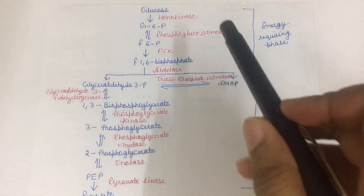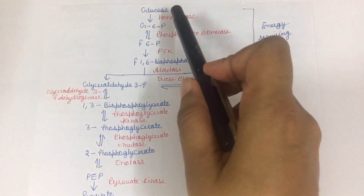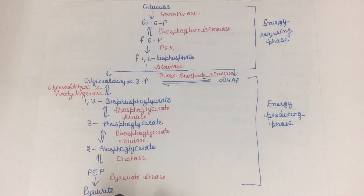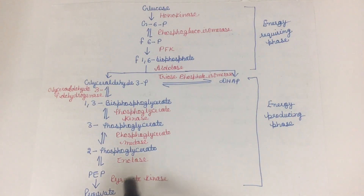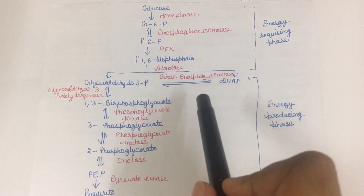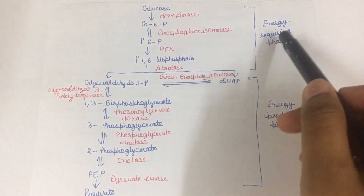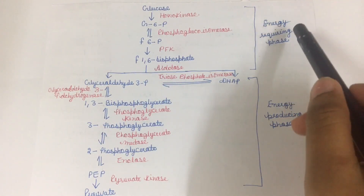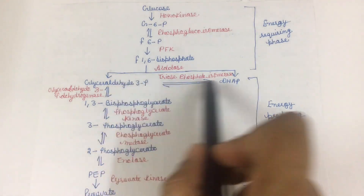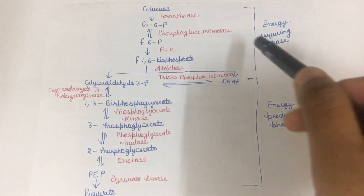This is the whole process of glycolysis. In glycolysis, one molecule of glucose is converted into two molecules of pyruvate. This reaction takes place in the cytoplasm of all prokaryotes and eukaryotes, and there are two phases in glycolysis: the energy-requiring phase and the energy-producing phase. This is the branching point of this process.